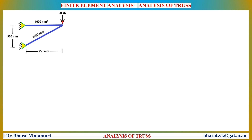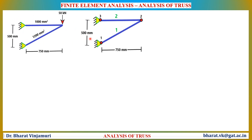While performing analysis using the finite element method, the first step is to convert the given geometric model into a finite element model. The finite element model consists of nodes and elements. This structure has two elements and three nodes. There is no specific node numbering scheme; the user can start node numbering in the reverse direction as well. Changing the node numbering will never affect the end result of the problem.